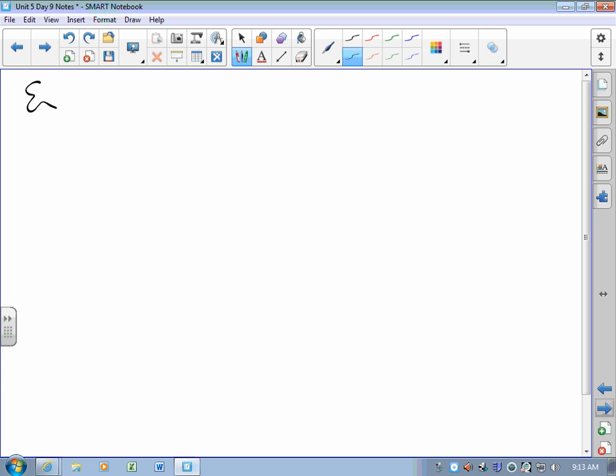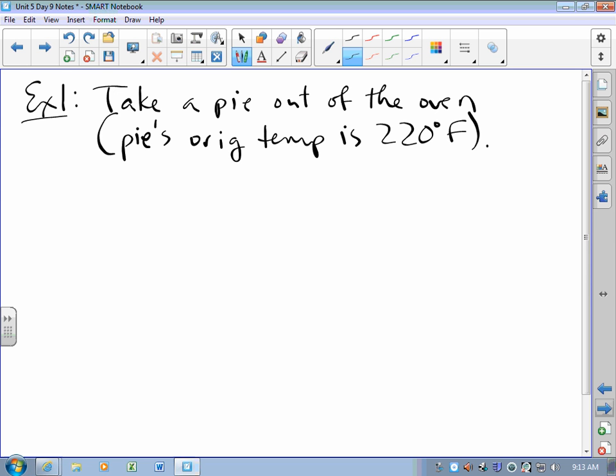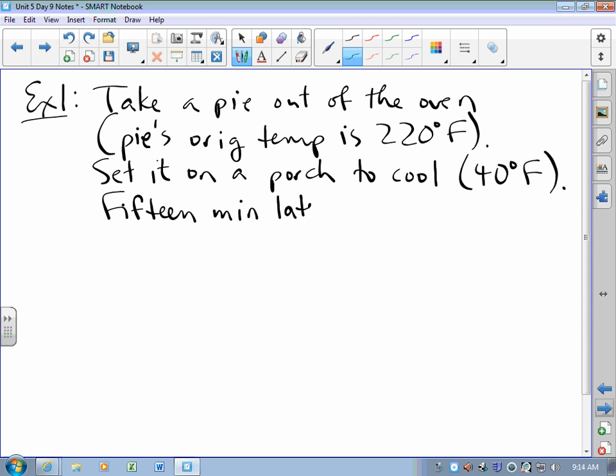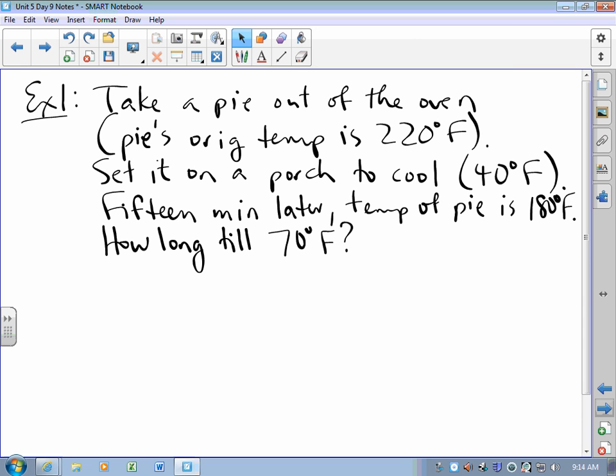By example, we're going to take a pie out of the oven. The pie's original temperature is 220 degrees Fahrenheit. We're going to set it on a porch to cool, and the porch is 40 degrees Fahrenheit. Fifteen minutes later, the temperature of the pie is 180 degrees Fahrenheit. How long till it's room temperature?